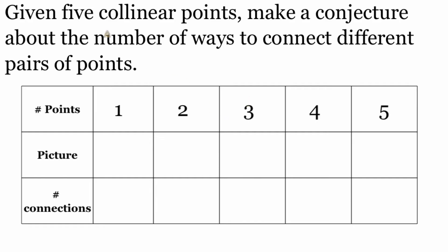In this example, we're looking at five collinear points and want to make a conjecture about the number of ways we can connect different pairs of points. We're not going to jump straight to five points — instead, we'll start with one point and build up. With just one point, there are no other points to connect to, so there are zero connections.